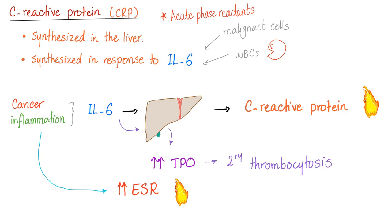Also, interleukin-6 will stimulate the liver to produce thrombopoietin, leading to an increased number of platelets. We call this process secondary thrombocytosis. Inflammation can also raise the ESR, so in acute inflammation you will have high ESR and high C-reactive protein at the same time.